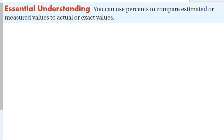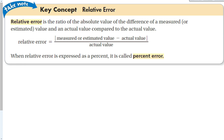The next essential understanding is that you can use percents to compare estimated or measured values to actual or exact values — this is called relative error. Relative error is the ratio of the absolute value of the difference between a measured or estimated value and an actual value, compared to the actual value. The formula is: |measured minus actual| divided by actual. When expressed as a percent, this is called percent error.